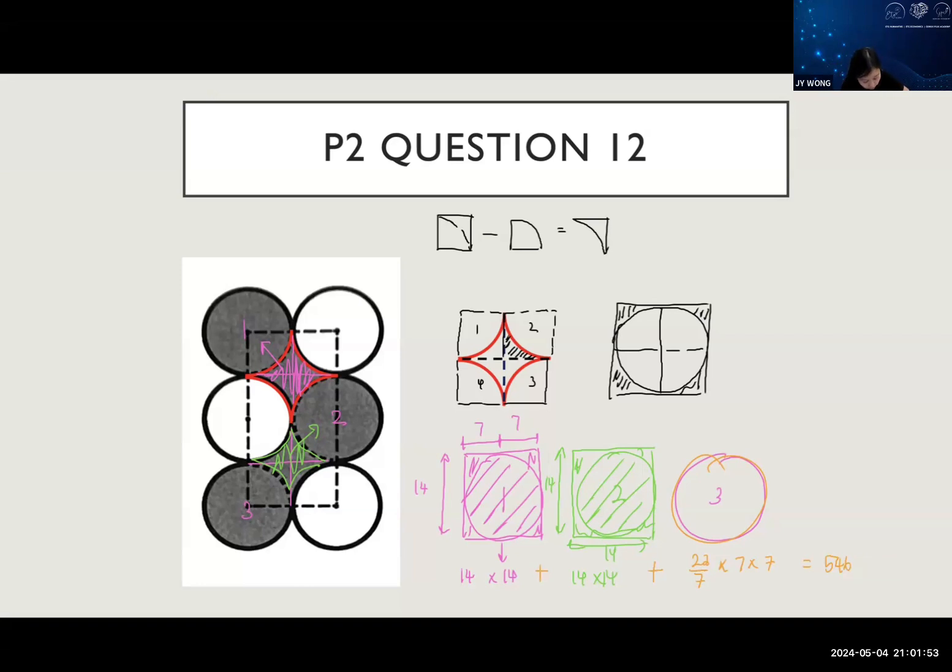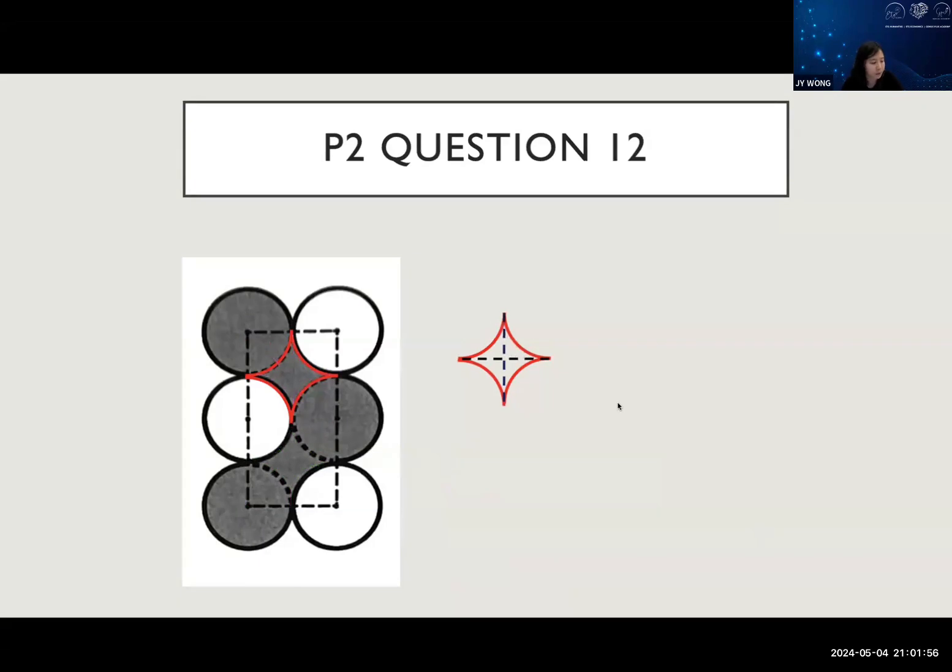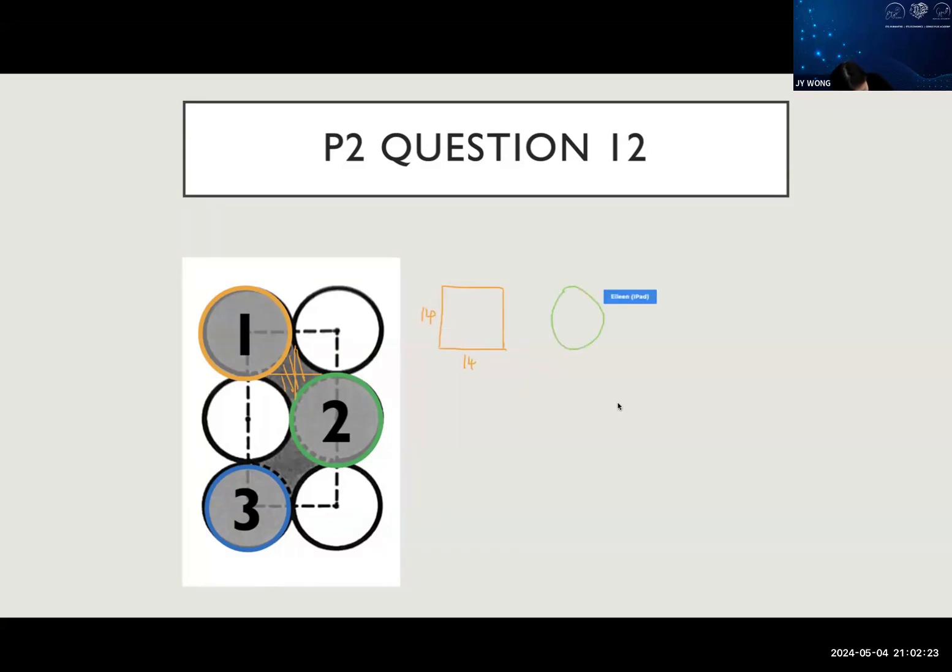Now I'll show you the animated version. This part will go with circle one to give you a square 14 times 14. Then circle two plus the corner gives you 14 times 14 again. And lastly, the third one will be a circle: 22/7 times 7 times 7. That's how you get your 546.